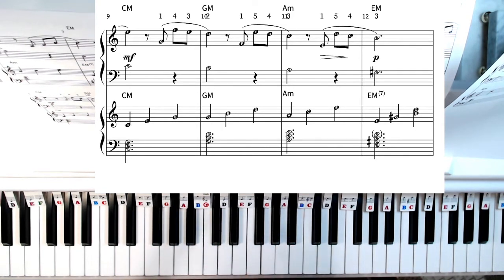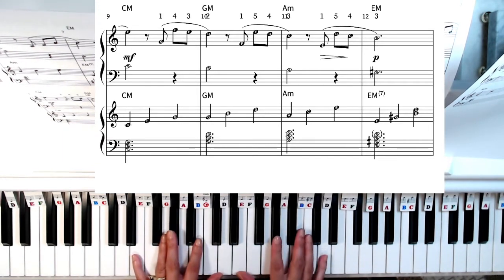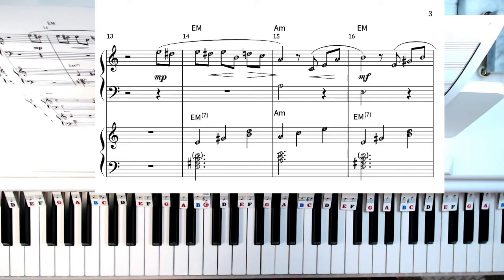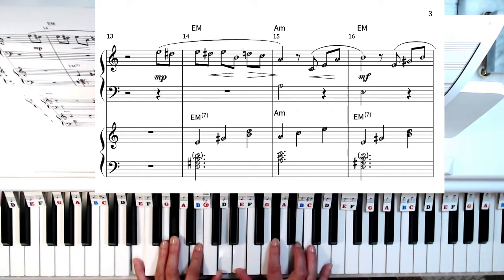And guess what? We're back to our pattern again fluctuating between A minor and if you said E major seventh you are correct. So E, G sharp, B, and D. Measure 13 is just a repeat of the beginning. So the E major seventh chord, E, G sharp, B, and D.